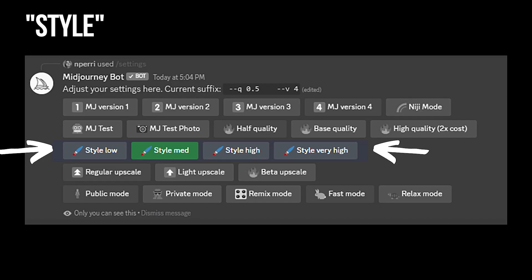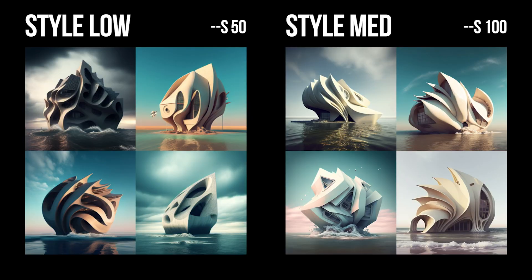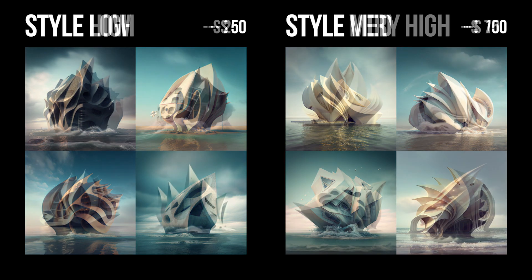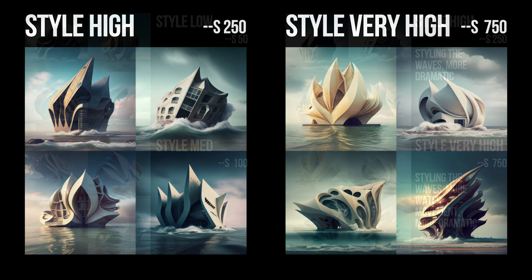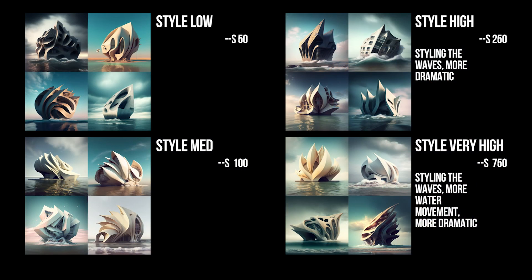Next I wanted to talk about the style parameter for your jobs. When you input this into your settings, you can see the numbers changing depending on how low or how high it is. Style doesn't mean your output comes out as a nice render — it means how far the AI interprets your words or stylizes the output in a certain fashion.